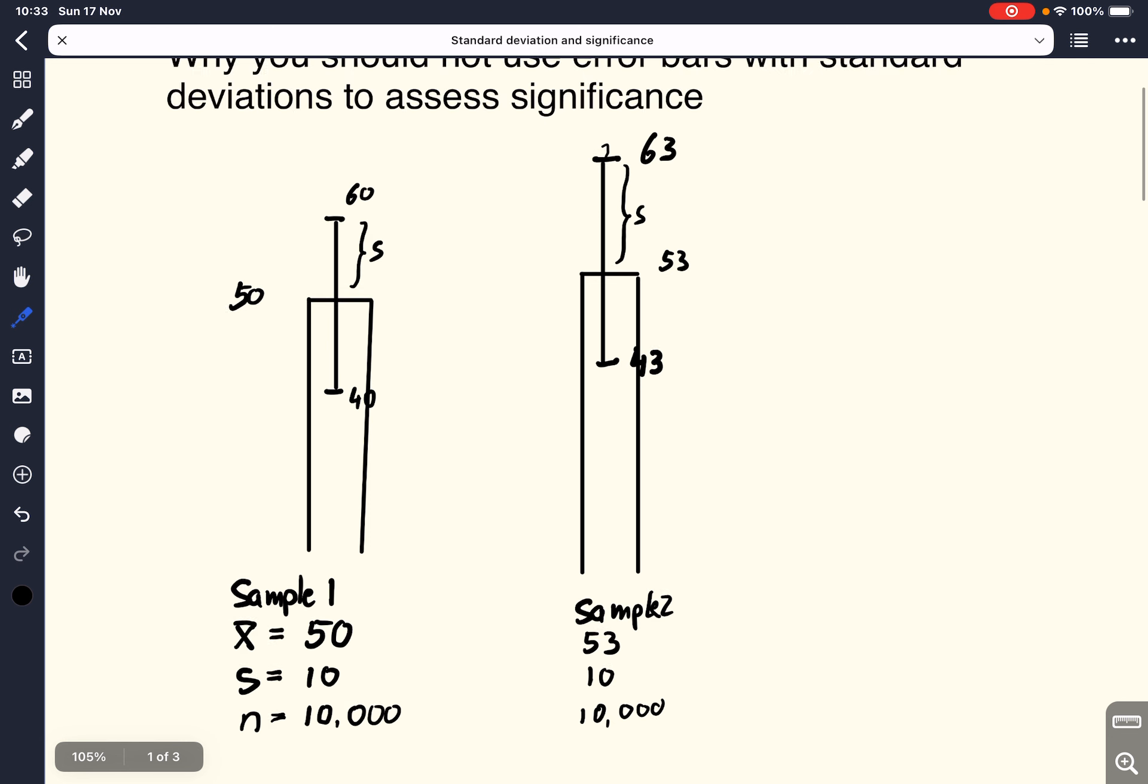In the previous example, we found that when the standard deviation error bars do overlap, we found that the samples were statistically significantly different. And that's a little bit counterintuitive from what we learn in our statistics lessons.